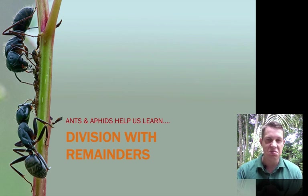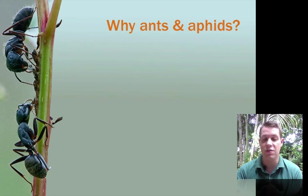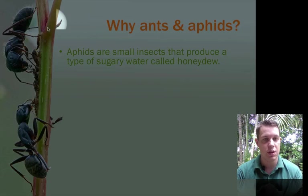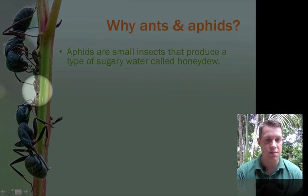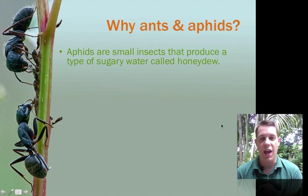To get us started, let's see how aphids and ants can help us learn about division. First off, you probably know what an ant is, but what's an aphid? Well, aphids are small insects that produce a type of sugary water called honeydew. These are the aphids. They're stuck on that plant and they eat the plant basically and they produce honeydew.